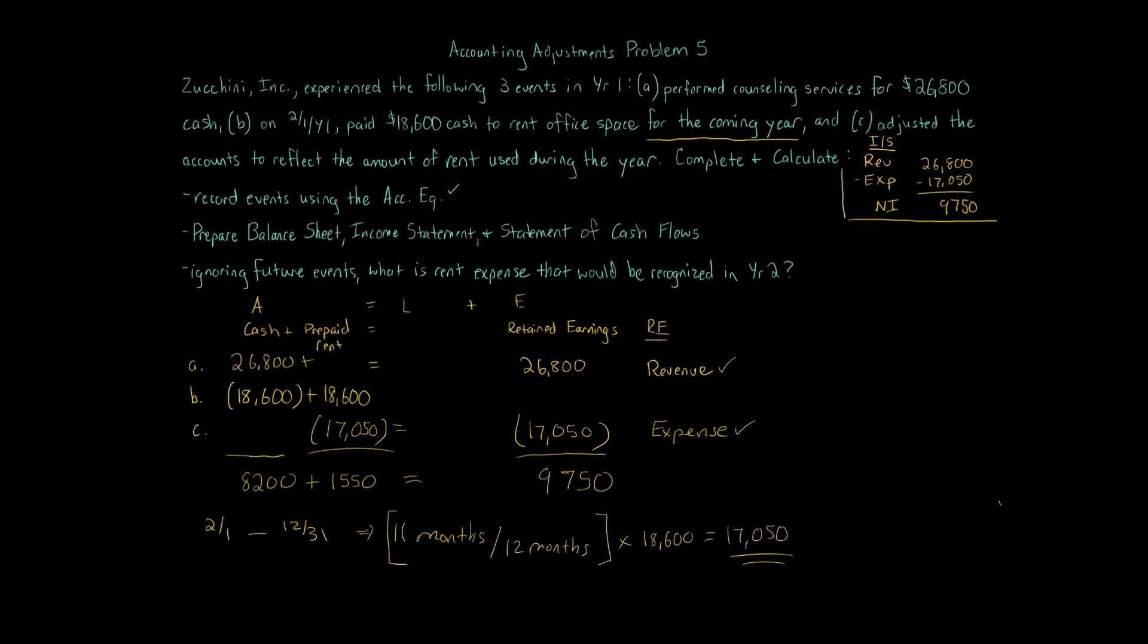Next, we have our balance sheet. This is always my favorite. We have our assets on the left, our liabilities and stockholders equity on the right. With the stockholders equity, we're just going to do retained earnings here. Keep it simple. So our assets, we have two, cash and prepaid rent. And we look at our balances. Cash balance, $8,200. Prepaid rent, $1,550. We're looking at the end of this year. We get our total, $9,750. Liabilities, zero. Retained earnings, $9,750. Add those up. We get $9,750. That's our balance sheet. Pretty simple.